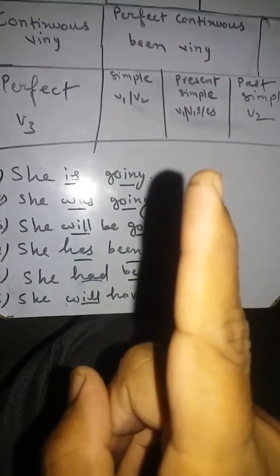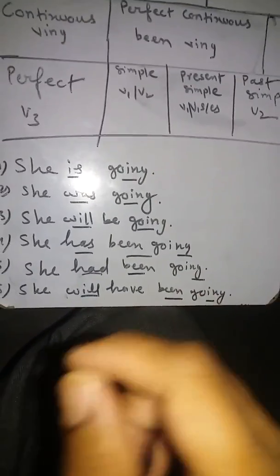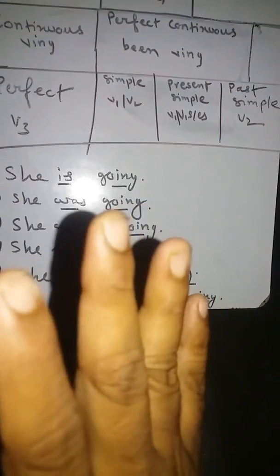Specifically, when you locate the first form of the verb, or verb with S or verb with ES, it is present simple. And specifically when you locate V2, it is past simple. Present simple and past simple share one uniqueness together: they never contain any helping verb.